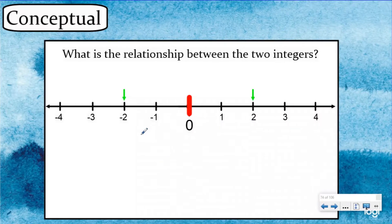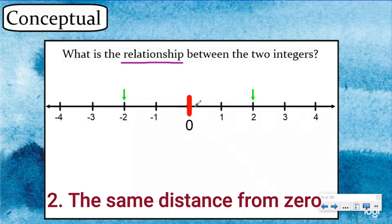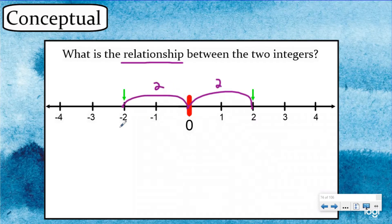To begin, I want to go back to our lesson when we talked about opposite integers. What is the relationship between the two integers? The two integers are opposite. What two things made numbers opposite? One, they're on opposite sides of zero. Two, they were the same distance from zero. Our positive two is two units to the right, and our negative two is two units to the left of zero. Which means the absolute value of these two numbers is the same — the distance between zero and an integer. So here, the absolute value would be two, and here, the absolute value would also be two, but it was two to the left.